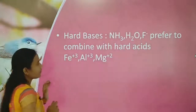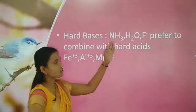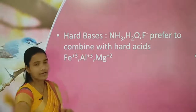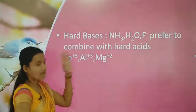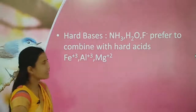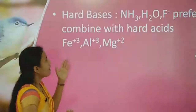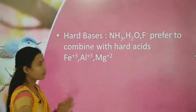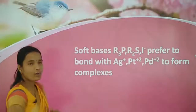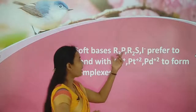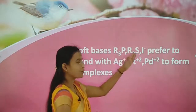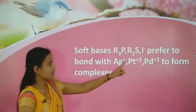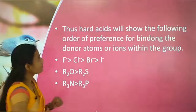Examples of hard bases include NH3, H2O, and F⁻ — these prefer to combine with hard acids such as Fe³⁺, Al³⁺, and Mg²⁺. Examples of soft bases include trialkylphosphorus (R3P) and R2As, and I⁻ — these prefer to bond with soft acids such as Ag⁺, Pt²⁺, and Pd²⁺.